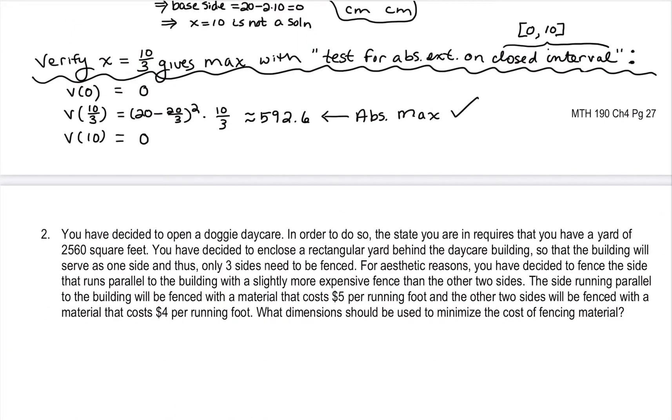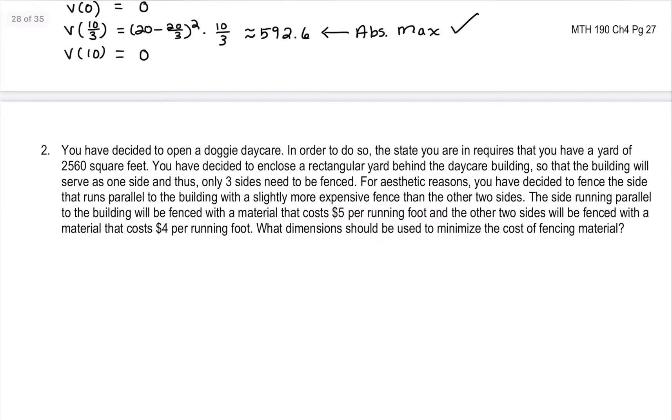So let's take a look at an example. Number two: you've decided to open a doggy daycare. In order to do so, the state requires that you have a yard of 2,560 square feet. You have decided to enclose a rectangular yard behind the actual building itself. So what that means is the building is going to serve as one side. So you're only going to have to fence in three sides. For aesthetic reasons, you have decided to fence the side that runs parallel to the building with a slightly more expensive fence. So there's a lot of information packed in there. So let's start one step at a time here, and let's begin by drawing a picture.